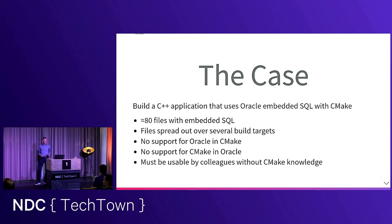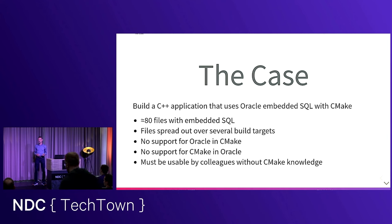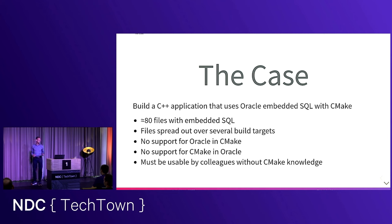The case is building a C++ application with Oracle embedded SQL in it. We have about 80 files with embedded SQL, spread over several build targets. To make it fun, there's no support in Oracle for CMake, so it's not easy to use. CMake also does not support Oracle out of itself. We have to write it all ourselves. I also had a specific requirement: I wanted it usable by colleagues who have basically no knowledge of CMake — all the difficulties should be hidden from them, so they can just add or remove a file and run the build.